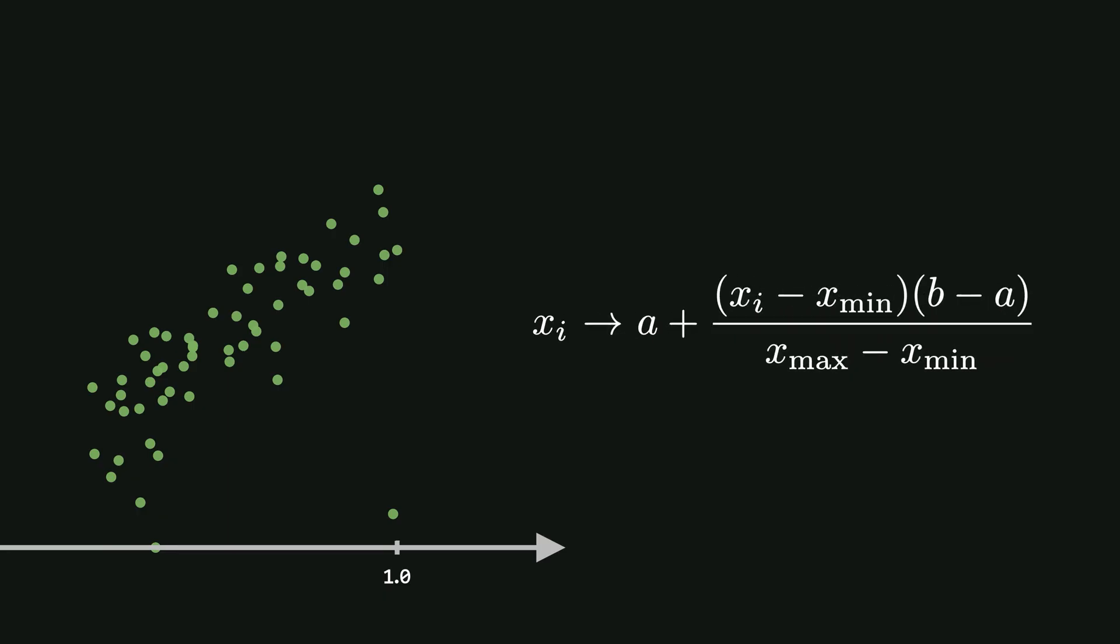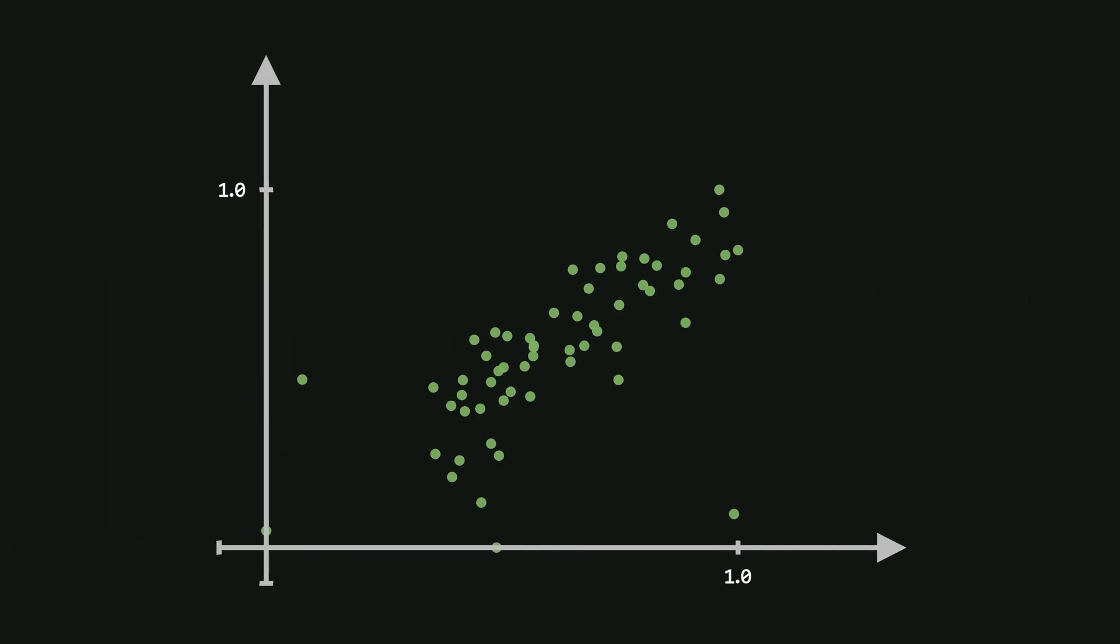If you want to scale a feature to a custom range, say A to B, we can generalize the formula like this. This method of normalization is simple to understand and easy to implement.